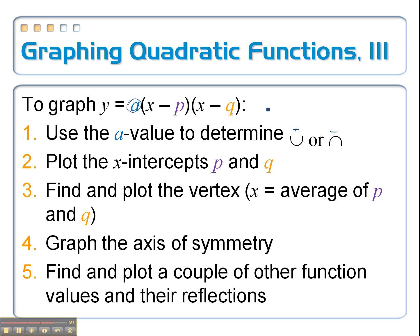If this was something like y equals 2 times x minus 7 times x plus 5, your x-intercepts are really positive 7 and negative 5. You'd have to change the signs of both of those. The reason why is, if I were to set this equal to 0, x minus 7 equals 0, I'd have to add that 7 over, and I'd get x equals 7.